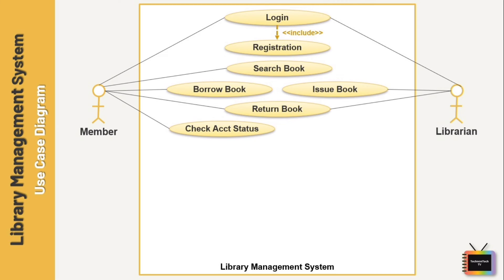Next I am adding the use case 'check account status'. The user gets to keep track of their account — it contains details like when the user borrowed the book, when the due date is, and the history of books borrowed and submitted. Next I am adding the use case 'calculate fine', which the librarian performs if there is an overdue in the return process.